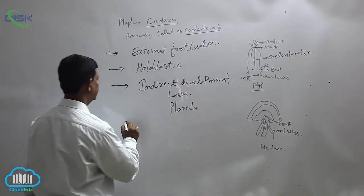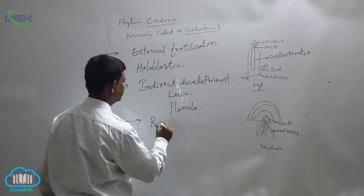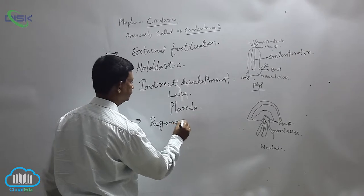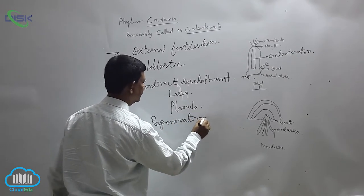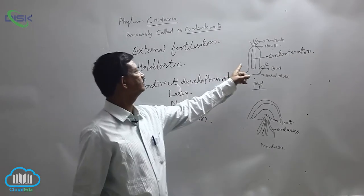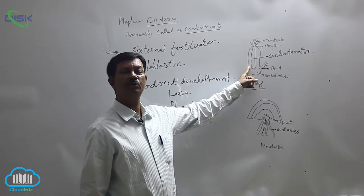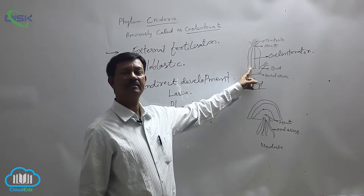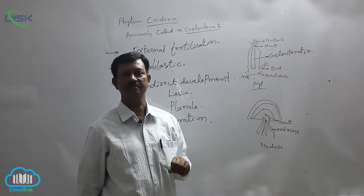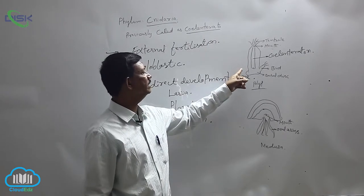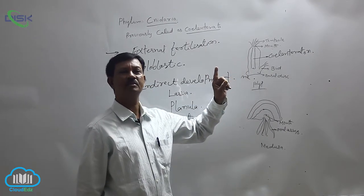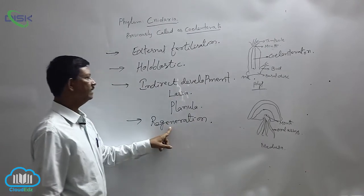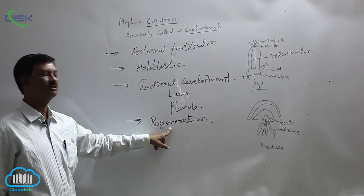Regeneration power is present in some animals. For example, hydra has strong regeneration power due to the presence of interstitial cells. If you divide a hydra into many pieces, each piece develops into a new hydra. That is why regeneration power is well marked in this phylum.